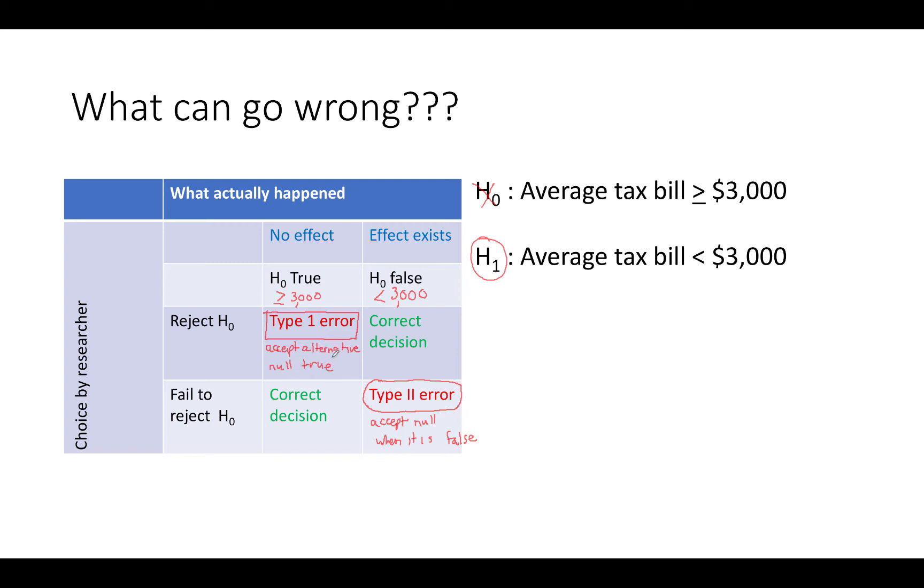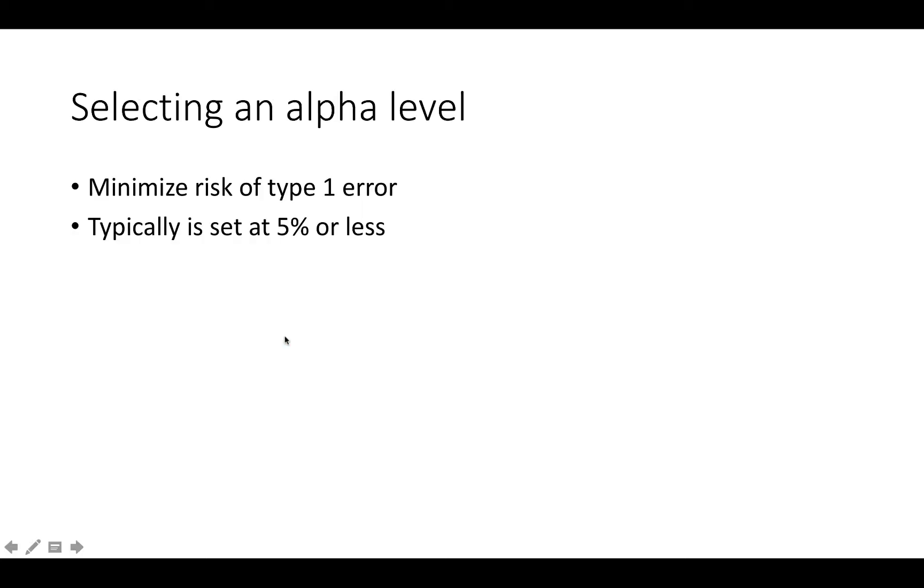The Type 1 error is seen as the greater problem because we are saying there is a treatment effect or a claim is supported when in fact it is not actually supported. Therefore, we attempt to select an alpha level or a level of significance to minimize the risk of Type 1 error. It is typically set at 5% or less.